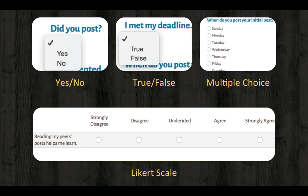The last type of close-ended response is the Likert scale. In this type of question, the respondent is able to reply to a statement or question by choosing from a range of responses. The response scale typically includes ranges such as agree to disagree, always to never, and important to unimportant. For example, "Reading my peers' posts helps me learn," with the range from strongly disagree to strongly agree.